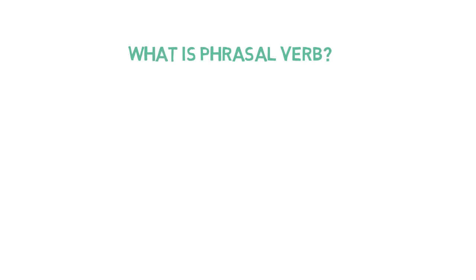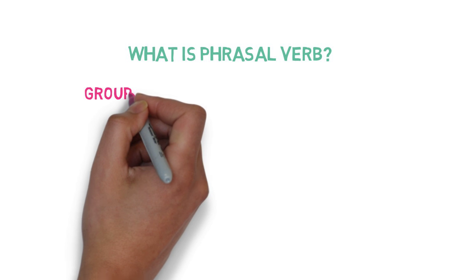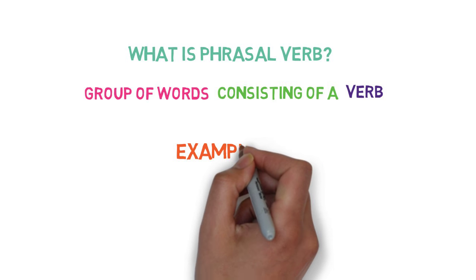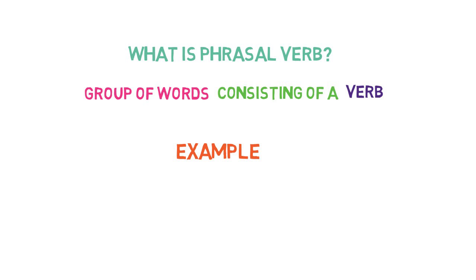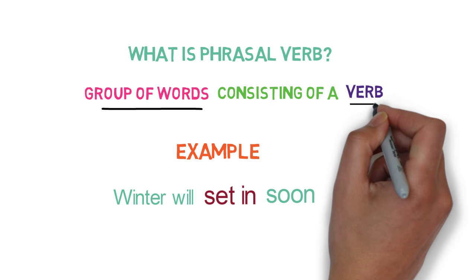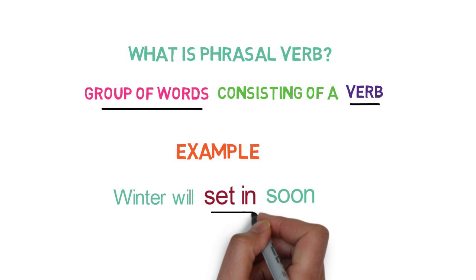So, what is a phrasal verb? Now, we know that a phrase is a group of words. A phrasal verb is a group of words consisting of a verb. Let's look into a sentence example to make things clear. 'Winter will set in soon.' Here, 'set' is a verb and 'in' is an adverb in this context. If we combine both, then it is a group of words and it consists of a verb. Hence, it is a phrasal verb.